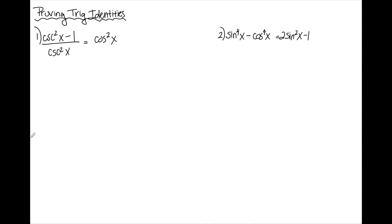Number one: I have cosecant squared x minus 1 over cosecant squared x is equal to cosine squared x. Whenever I'm proving trig identities, I'm always going to try and get the more complex side to look like the simple side. It's pretty obvious that cosine squared x is way simpler than cosecant squared x minus 1 over cosecant squared x, so the left-hand side is the side I'm going to try and reduce.